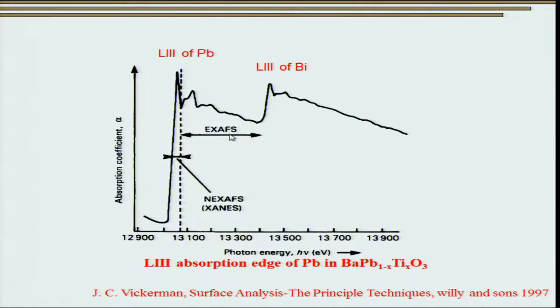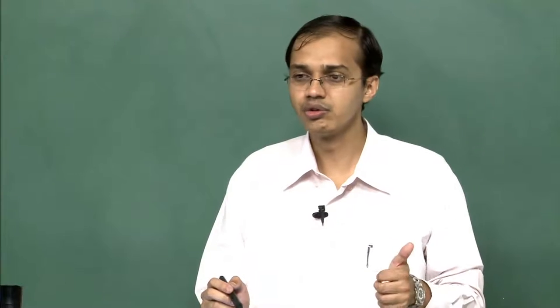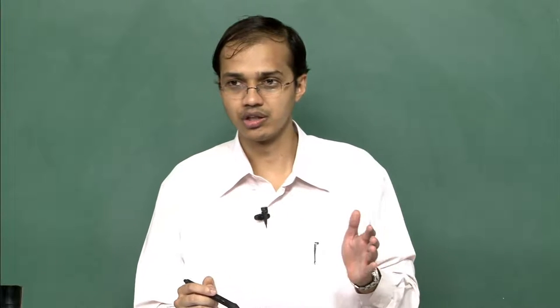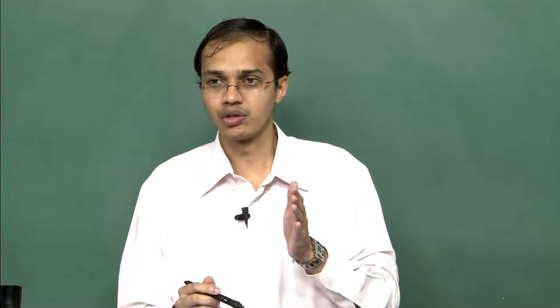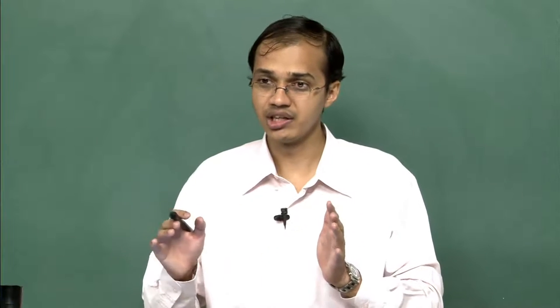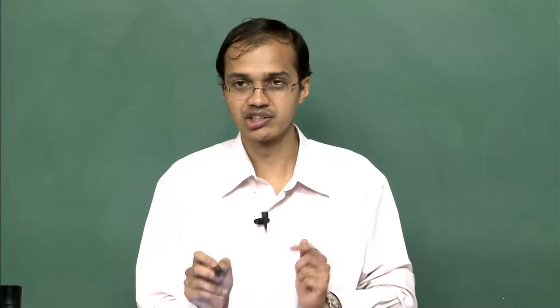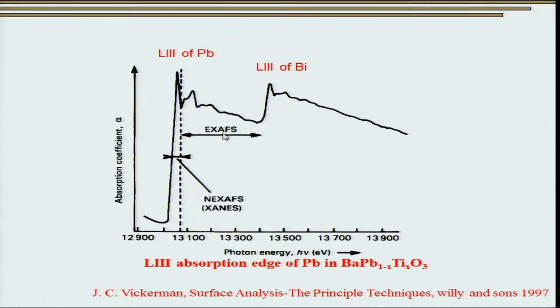Whenever we talk about absorption edges, it has to be specific. To study a particular element, you must focus on a particular edge. Here we see two absorption edges: the L3 absorption edge of lead and the L3 absorption edge of bismuth. Focusing on the L3 absorption edge of lead — the region very near to this edge comprises the XANES spectra, while the region far away comprises the EXAFS. The differentiation between EXAFS and XANES is somewhat arbitrary: as a rule of thumb, within about 100 eV of the absorption edge is XANES, while beyond 50–100 eV is EXAFS.